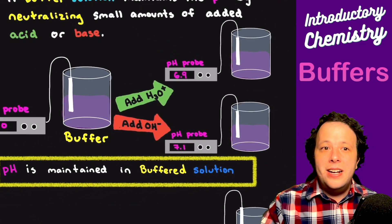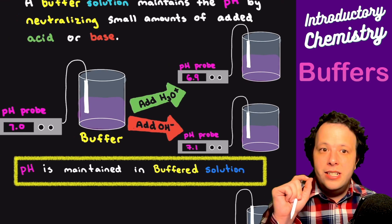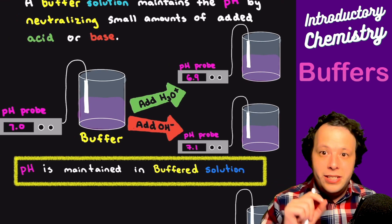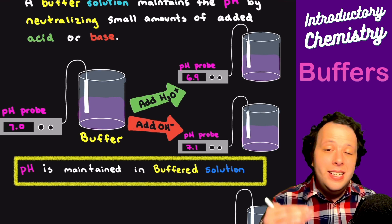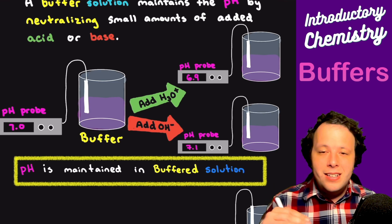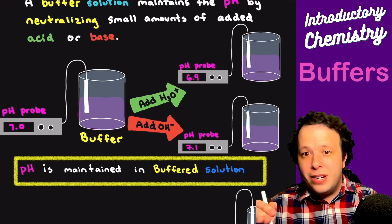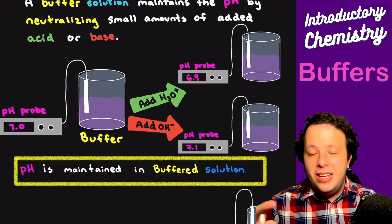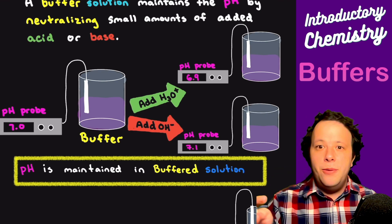When it comes to a buffer, it resists change. The pH is relatively maintained. It's an equilibrium process, meaning you tried to make the reaction go forward but it resisted it. It went back.